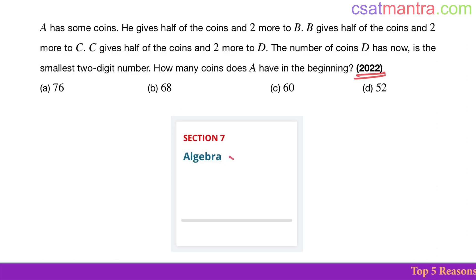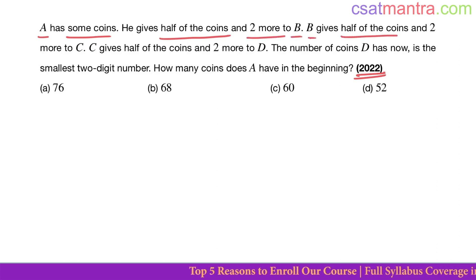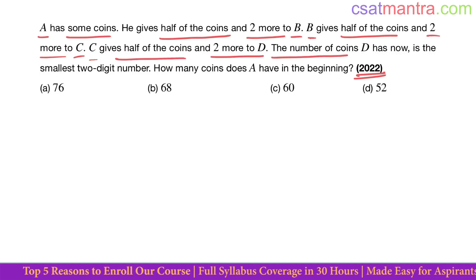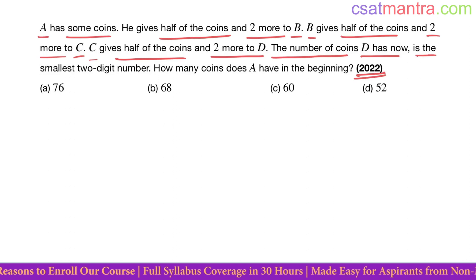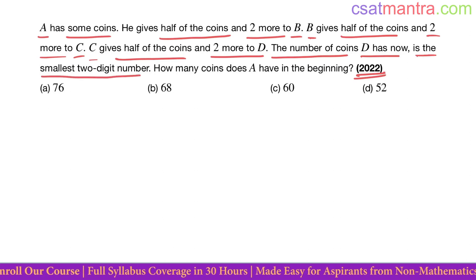2022 question based on algebra. A has some coins. He gives half of the coins and two more to B. B gives half of the coins and two more to C. C gives half of the coins and two more to D. The number of coins D has now is the smallest two-digit number. How many coins does A have in the beginning?